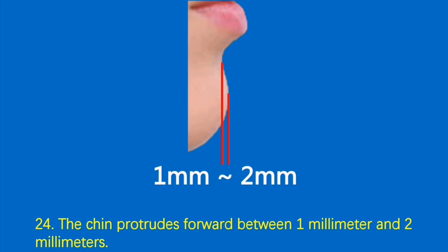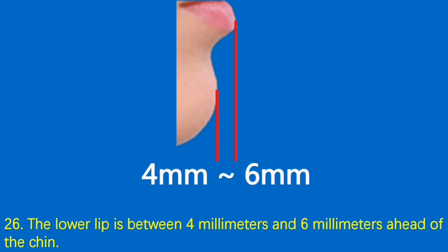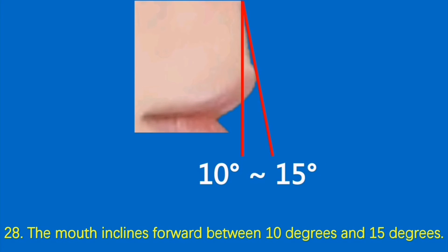Condition 24: The chin protrudes forward between 1 mm and 2 mm. Condition 25: The chin is between 0 mm and 2 mm behind the forehead. Condition 26: The lower lip is between 4 mm and 6 mm ahead of the chin. Condition 27: The upper lip is between 2 mm and 4 mm ahead of the lower lip. Condition 28: The mouth inclines forward between 10 degrees and 15 degrees.